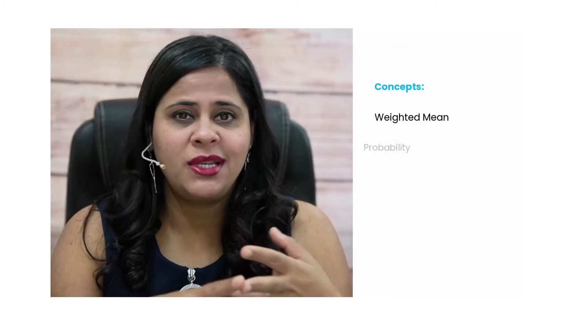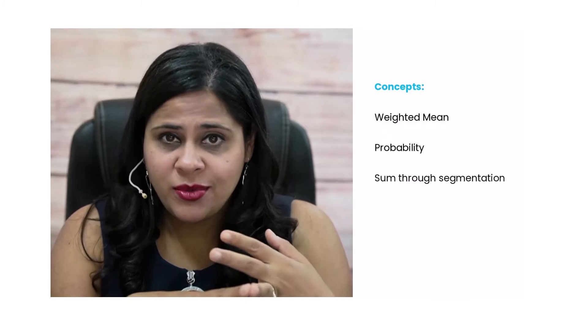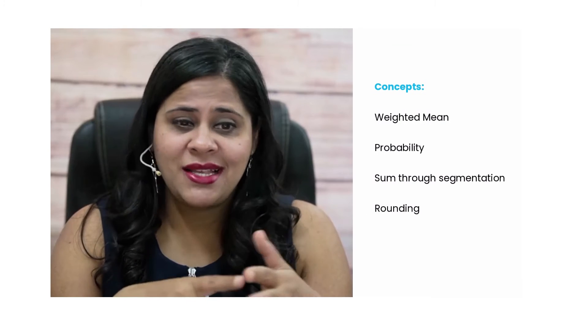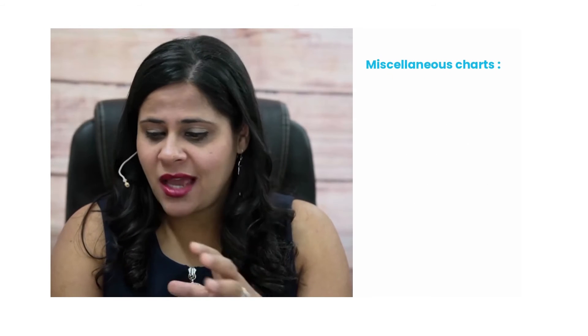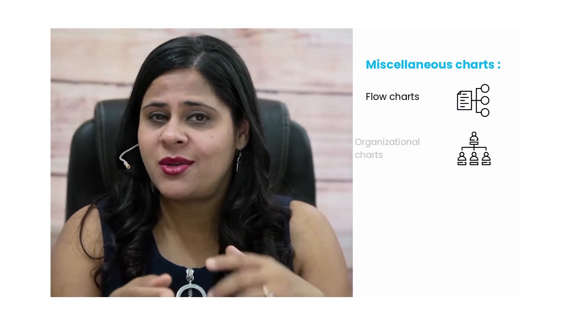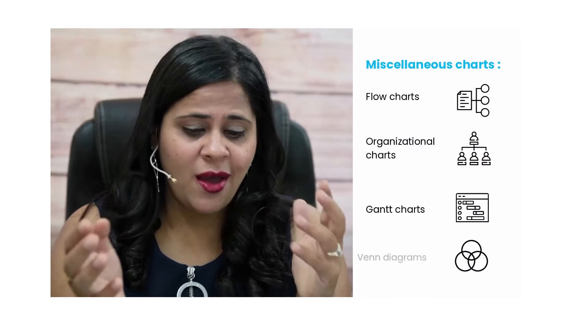In this module, we're going to delve into concepts such as weighted mean, probability, sum through segmentation, rounding, estimation, and so on and so forth. Moreover, you will get a chance to tackle miscellaneous charts such as flow charts, organizational charts, Gantt charts, Venn diagrams, and a lot more. Overall, by the end of this module, even seemingly complex charts won't seem so intimidating, and by the time you complete this module, you will have covered about 80% of all GI questions.